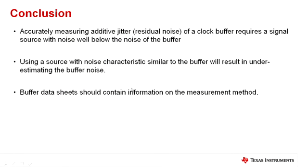In conclusion, the key points to remember are: first, to properly measure the residual noise of a buffer, you need to pick a low noise source. If you don't, you'll get a significantly skewed result, and using a buffer in your clocking design may lead to degraded performance that you didn't expect. Also, when reading the data sheets of fan-out buffers, it's important to look for information that explains how the residual noise or additive jitter measurement was made, because otherwise you can't be sure that the spec you're reading is accurate.